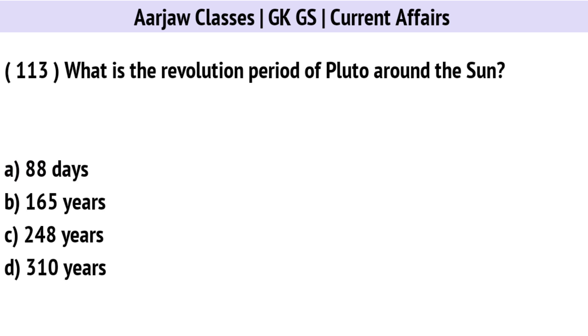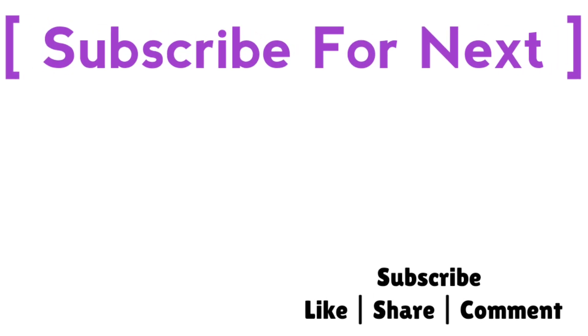What is the revolution period of Pluto around the Sun? Correct option is C: 248 years.